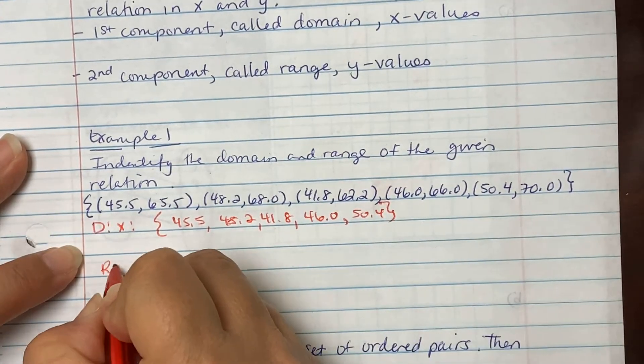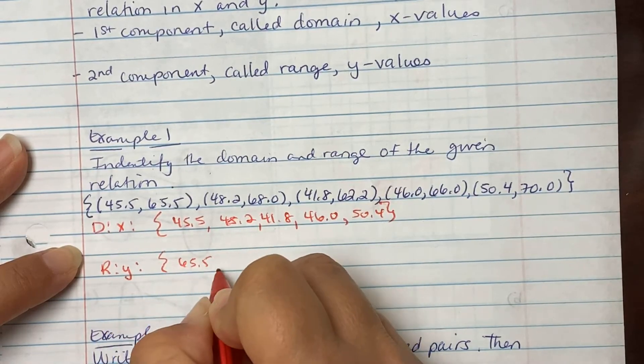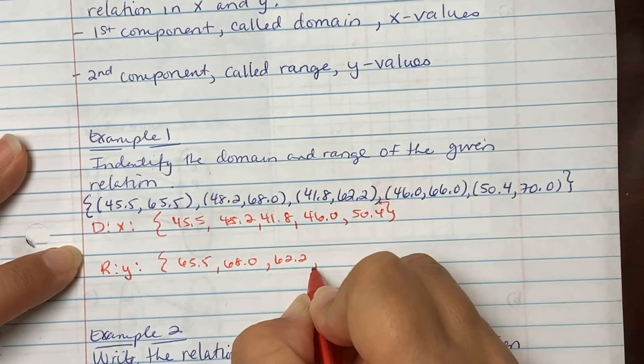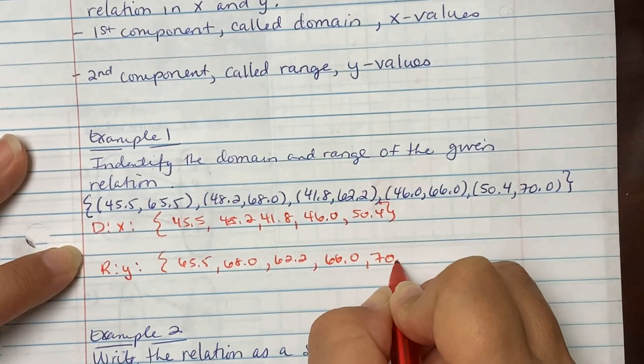Then the range are your y values. So we see 65.5, 68.0, 62.2, 66.0, and then 70.0.